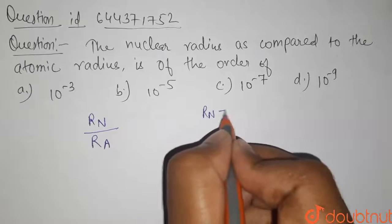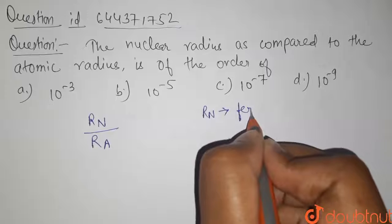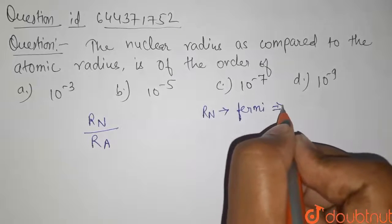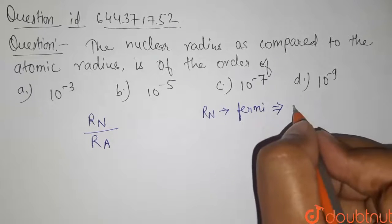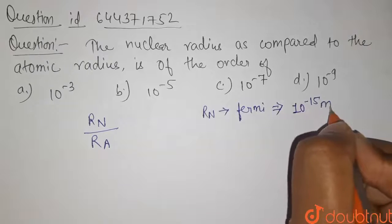The nuclear radius is measured in Fermi, and one Fermi equals 10 to the power minus 15 meter.